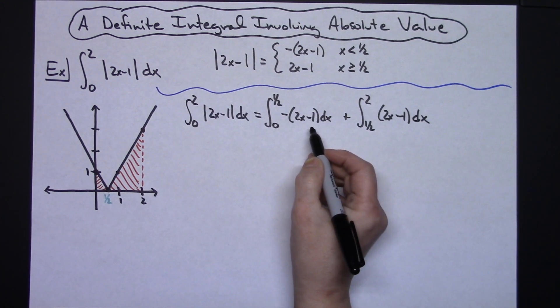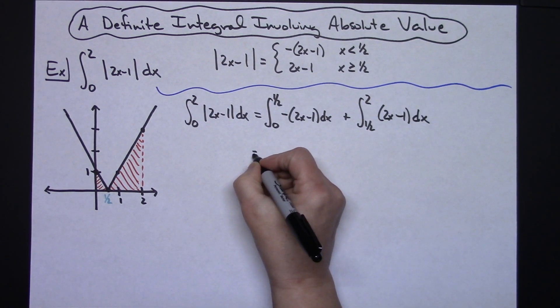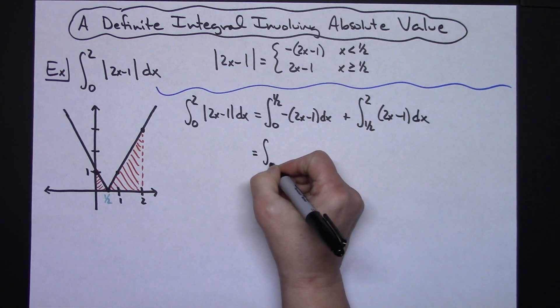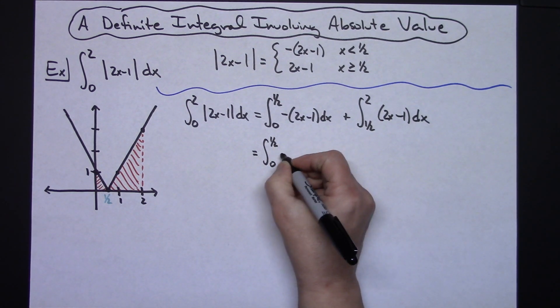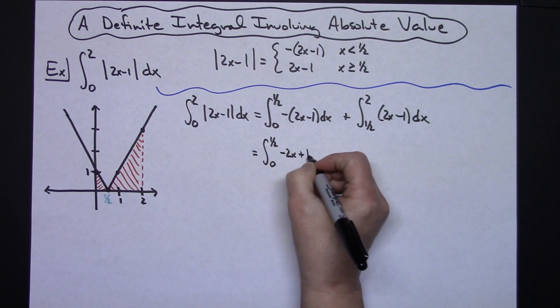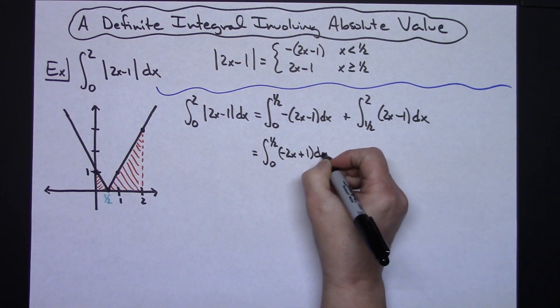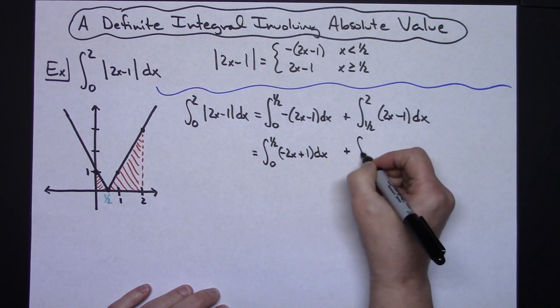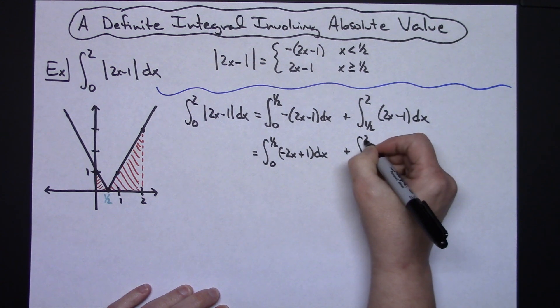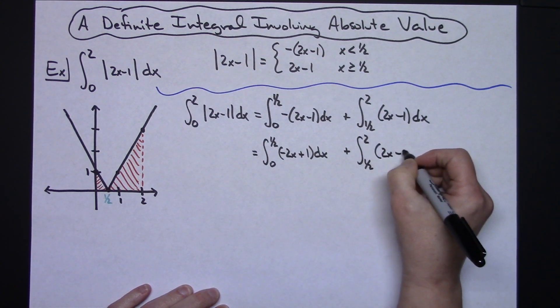I'm going to go ahead and distribute that negative there before I do any integration so 0 to 1 half and then we'll have negative 2x plus 1. And I'm not going to change anything on this integral or start integrating just quite yet, 2x minus 1 dx.